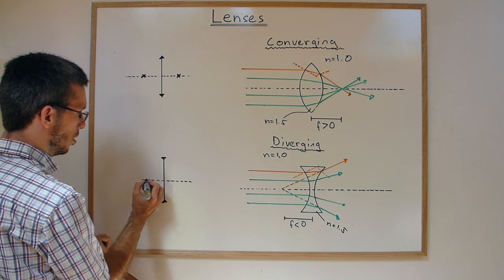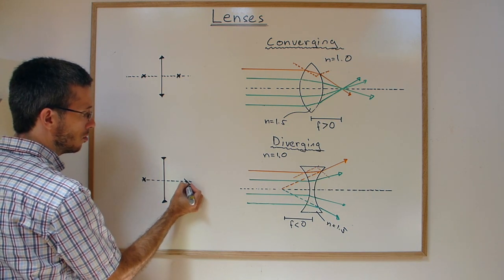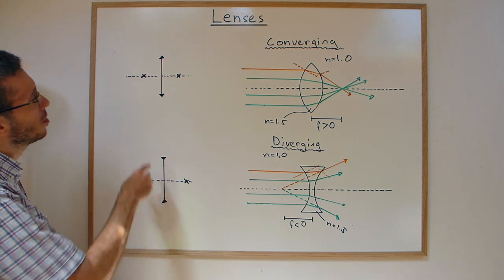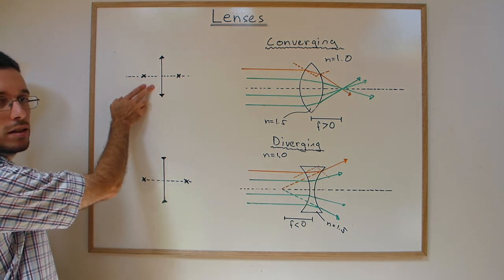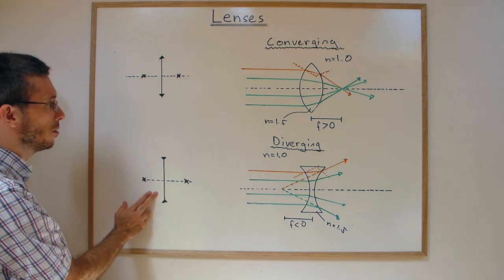In this case, you have the real focal point here, but I could have turned the lens around and have the same effect from the other side. This is how we draw a converging lens the lazy way, and this is how we draw a diverging lens the lazy way.